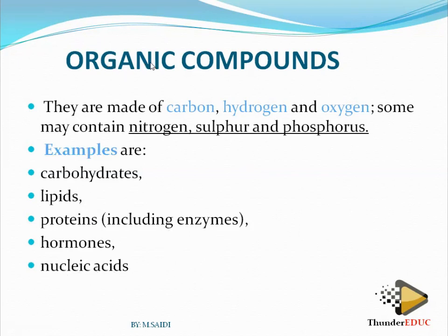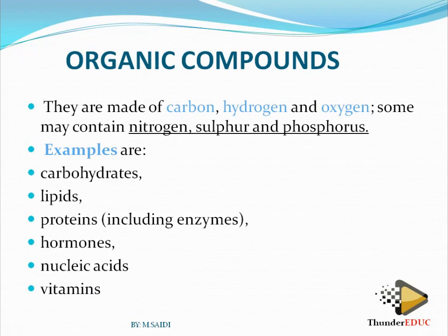Nucleic acids are also examples of organic compounds. Nucleic acids include DNA and RNA — the genetic makeup of an individual. DNA is an example of a nucleic acid. Vitamins are also examples of organic compounds; they are needed in small amounts but bring about the normal functioning of the body.